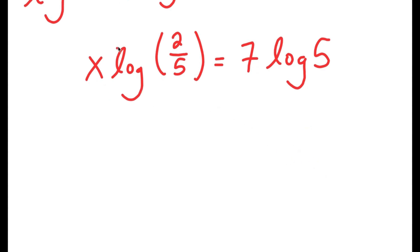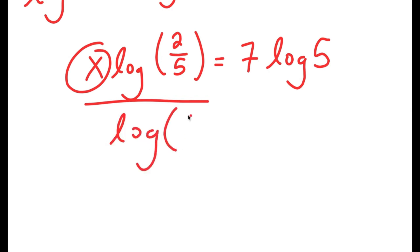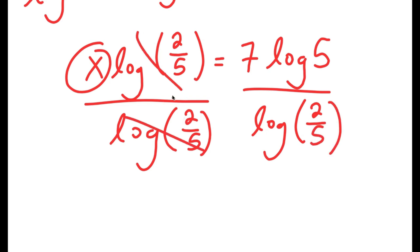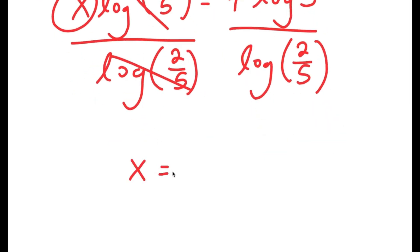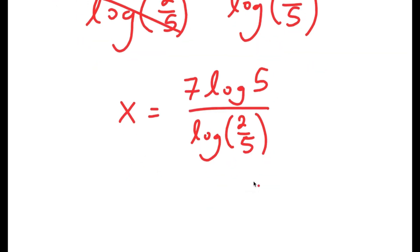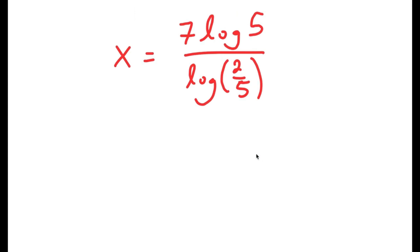So I get x times log of 2 over 5 is equal to 7 times log 5. Now, we obviously want to find the value of x, so we have to get rid of log 2 over 5 by dividing both sides by log 2 over 5. These two cancel out and I get x is equal to 7 times log 5 over log of 2 over 5. And we have our answer here.